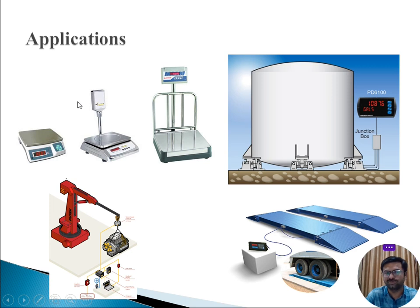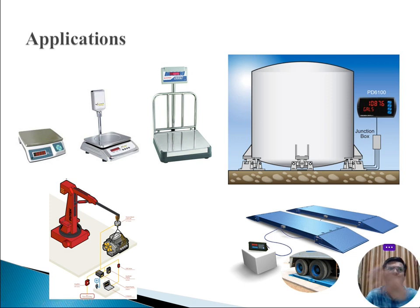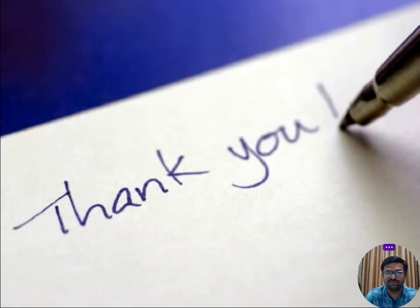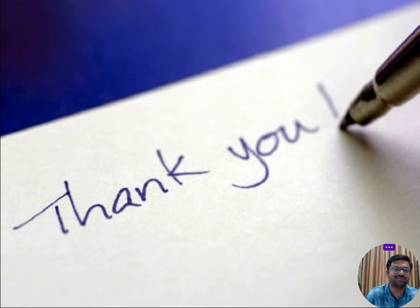For applications, the load cell is used to measure the weight of an object. It can be used in grocery shops, cranes, and weighing machines. It can also measure very heavy weights, such as the weight of a bus or a car. This covers everything related to the strain gauge and load cell — its operating principle, constructional details, and applications. Thank you for your patient listening.